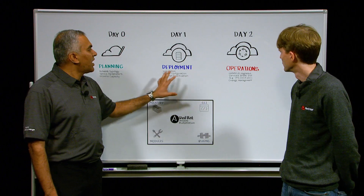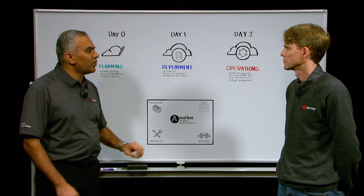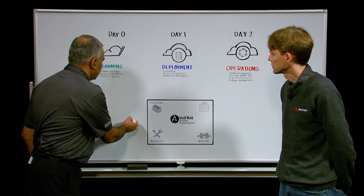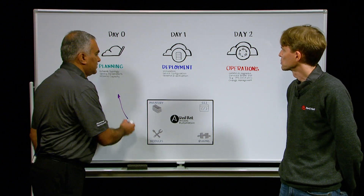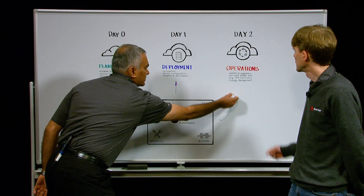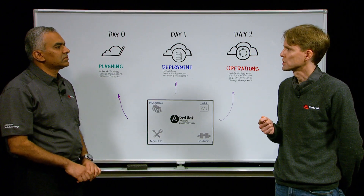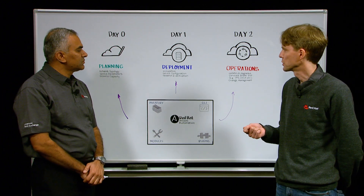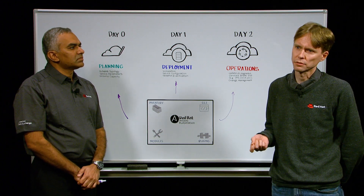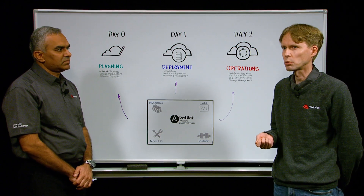Day two is the phase after our services and infrastructure has been running stable for a while. We know that Ansible is a great tool for planning our infrastructure, as well as day one, where we're actually deploying our infrastructure. But it can also be a great tool for day two operations. This can be things as simple as upgrades or configuration changes, but it's also good for scale up — increasing the number of services that we have available — or scaling down, decreasing those same services when they're no longer required.